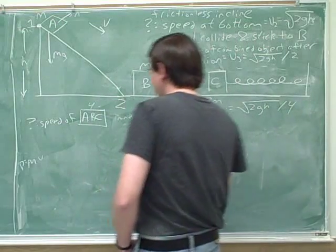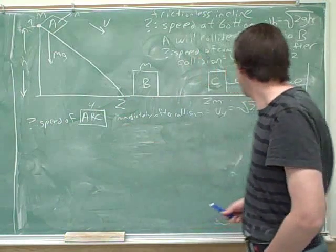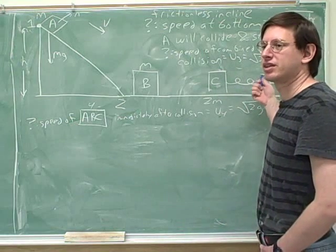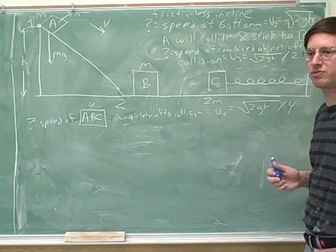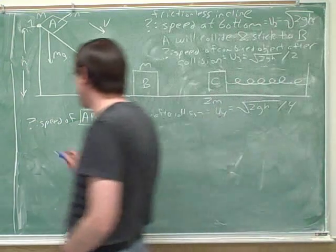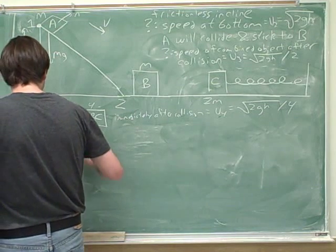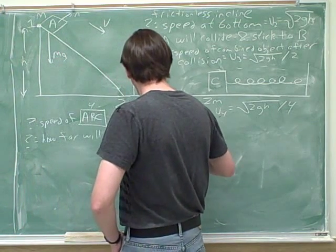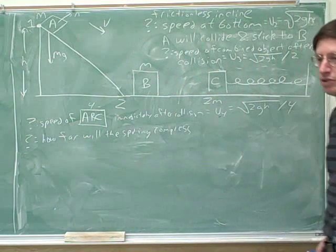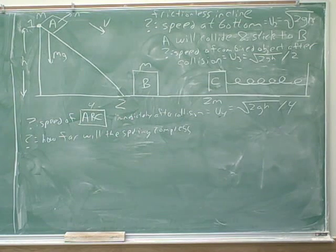Let me give you one more part to the problem. Now that we have the A, B, and C objects stuck together, they're going to start compressing the spring. But the spring will not compress forever. Eventually it will get to a point of maximum compression. So the final question is: how far will the spring compress by the time it gets to its maximum compression?